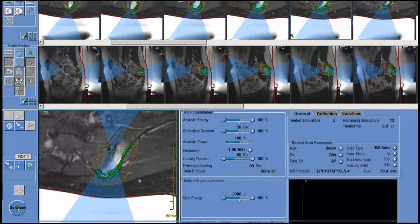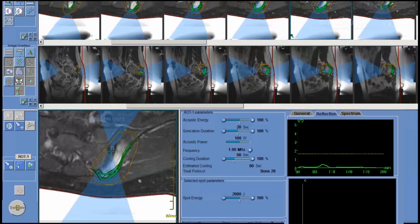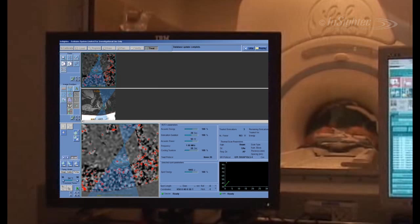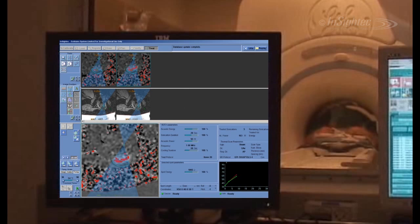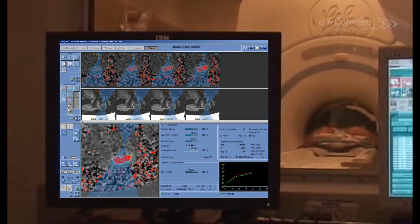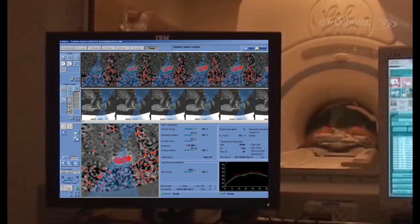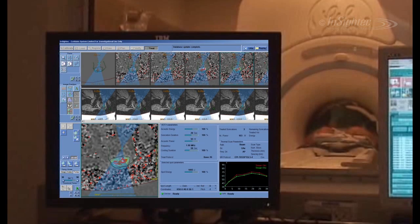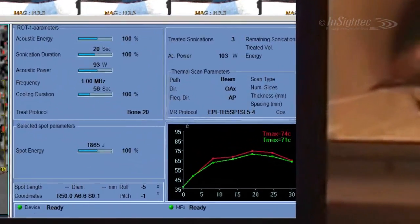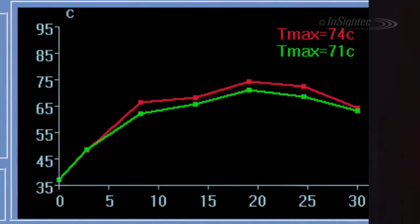Exablate treatment consists of multiple sonications delivered until the entire targeted tissue is ablated. Each sonication lasts about 20 seconds. When the sonicate button is pressed, the MR begins scanning, energy delivery begins, and thermal images are displayed, showing the temperature buildup. The temperature in the bone-soft tissue interface should reach between 65 and 85 degrees Celsius.